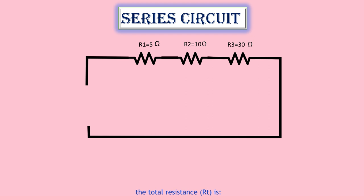the total resistance, Rt, is Rt equals R1 plus R2 plus R3. Rt equals 5 plus 10 plus 30. Rt equals 45 ohm.